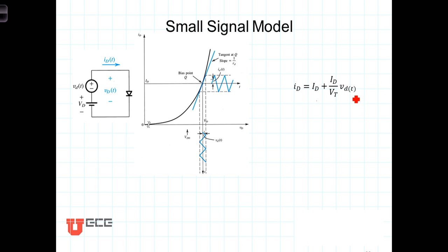Note the proportionality constant: capital I sub D divided by capital V sub capital T. It's got the units of amps per volt, or one over resistance. So we're now going to define what is known as the small signal resistance or the incremental resistance.